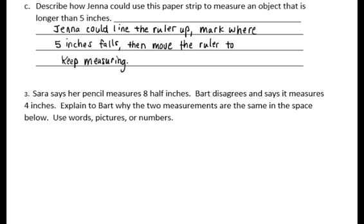Next, I have a couple of questions to answer. This one says, describe how Jenna could use this paper strip to measure an object that is longer than 5 inches. So that strip was only 5 inches. So my answer says that Jenna could line the ruler up, mark where 5 inches falls, and then move the ruler to keep measuring. So you could use that same strip over and over again to measure something that is longer than 5 inches.